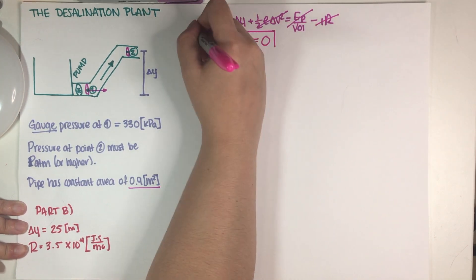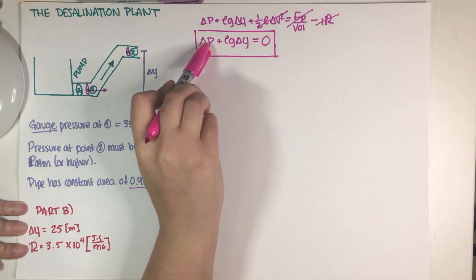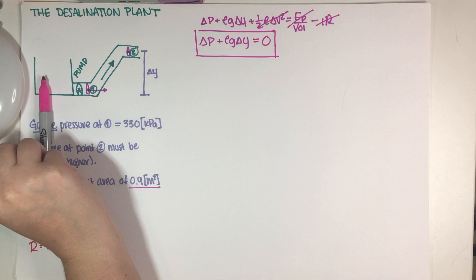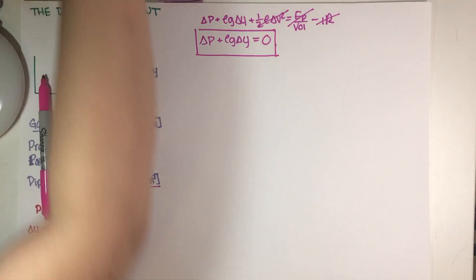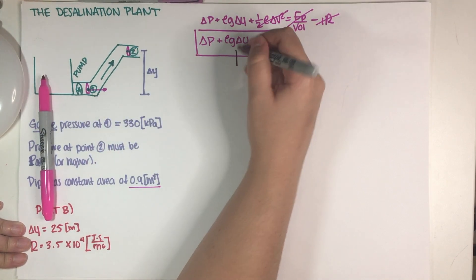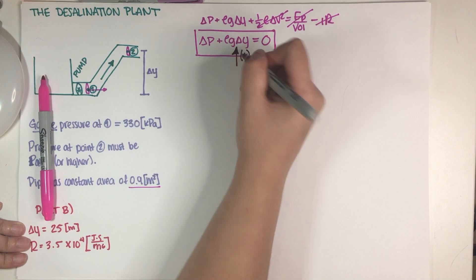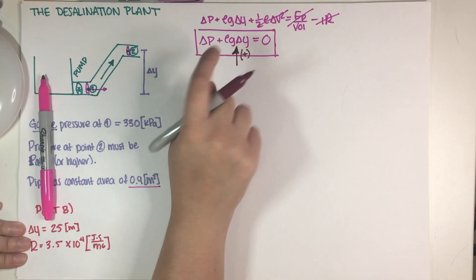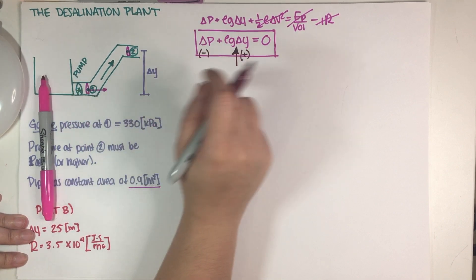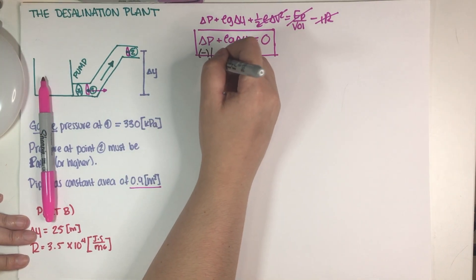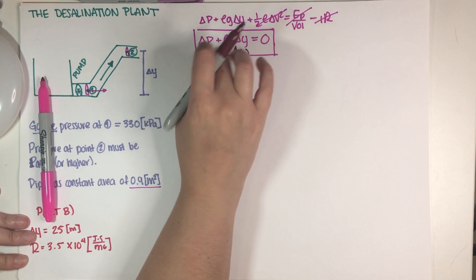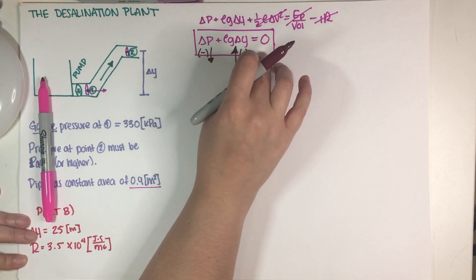So the Bernoulli equation for this scenario reduces to just: delta p plus the rho-g-delta-y potential energy term equals zero. Looking at the equation, the height term is positive because we're going from low to high. Since they must sum to zero, the pressure difference term must be negative. There is a maximum height because the given pressure is fixed, so minimizing the pressure difference maximizes delta y.